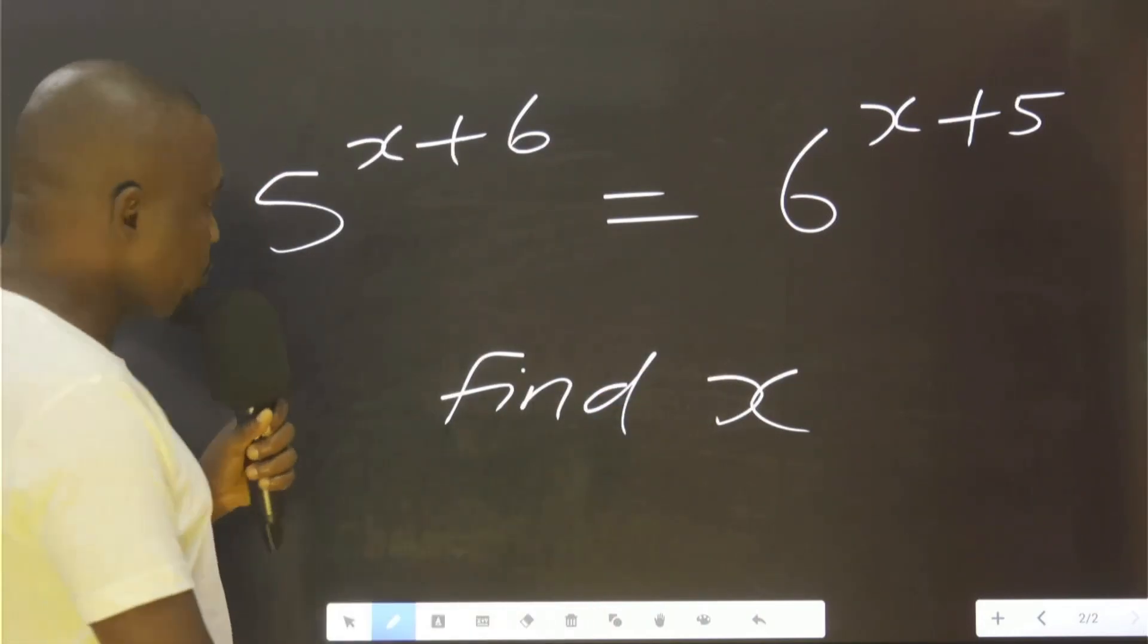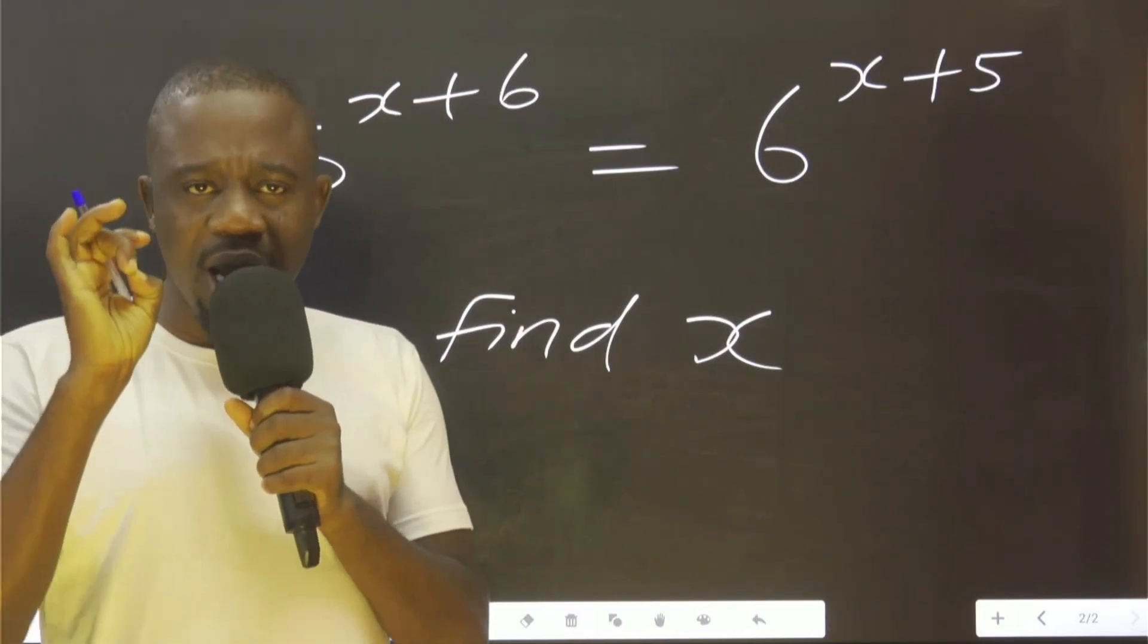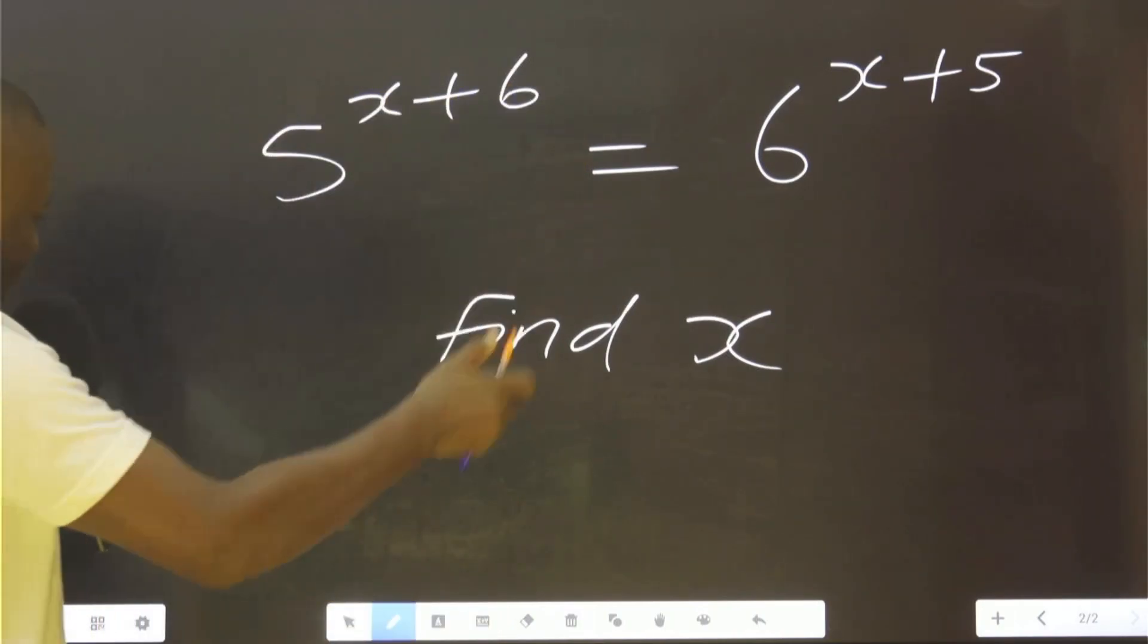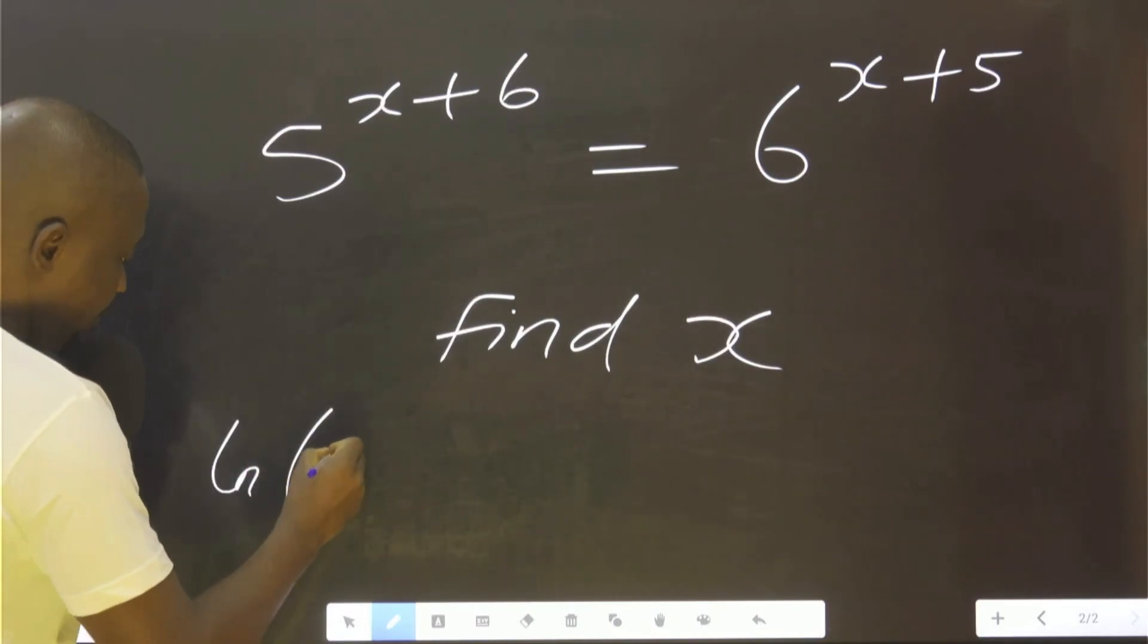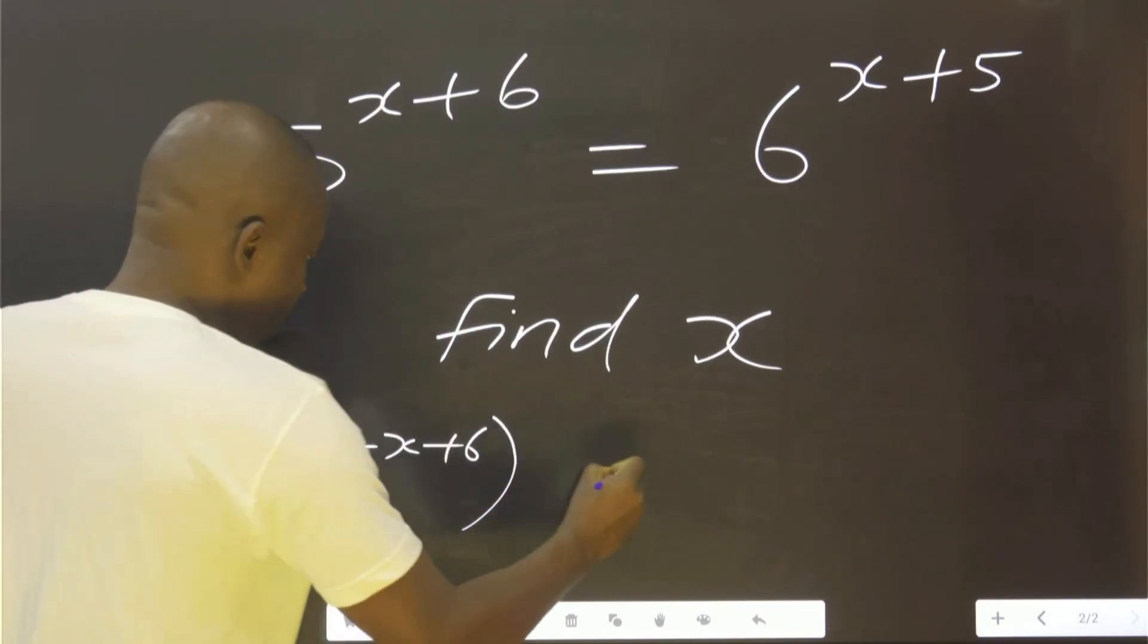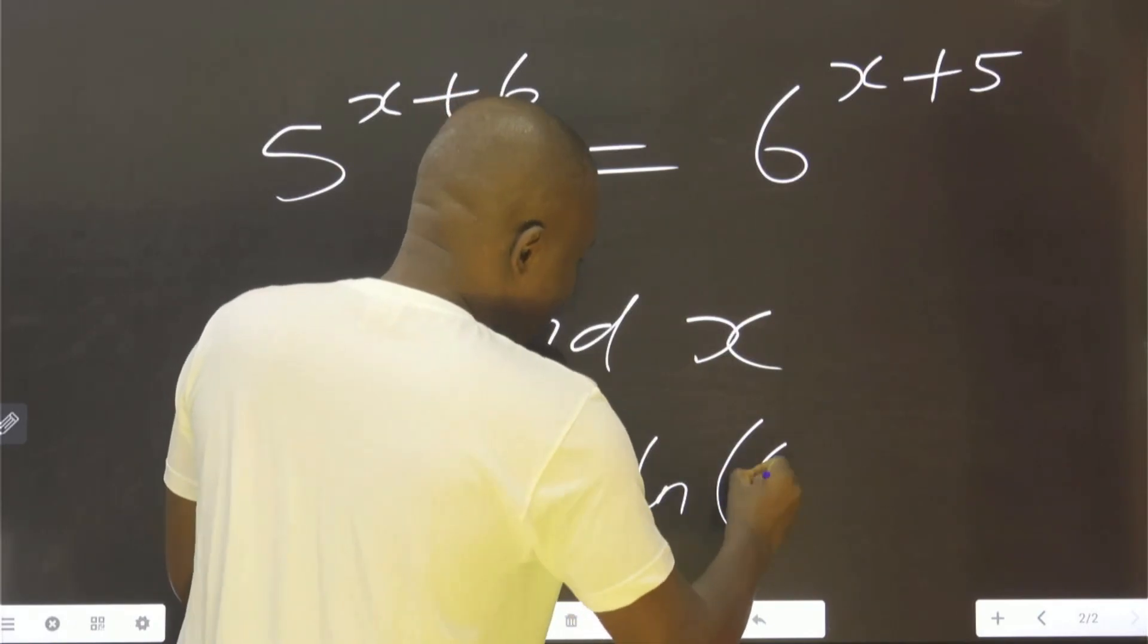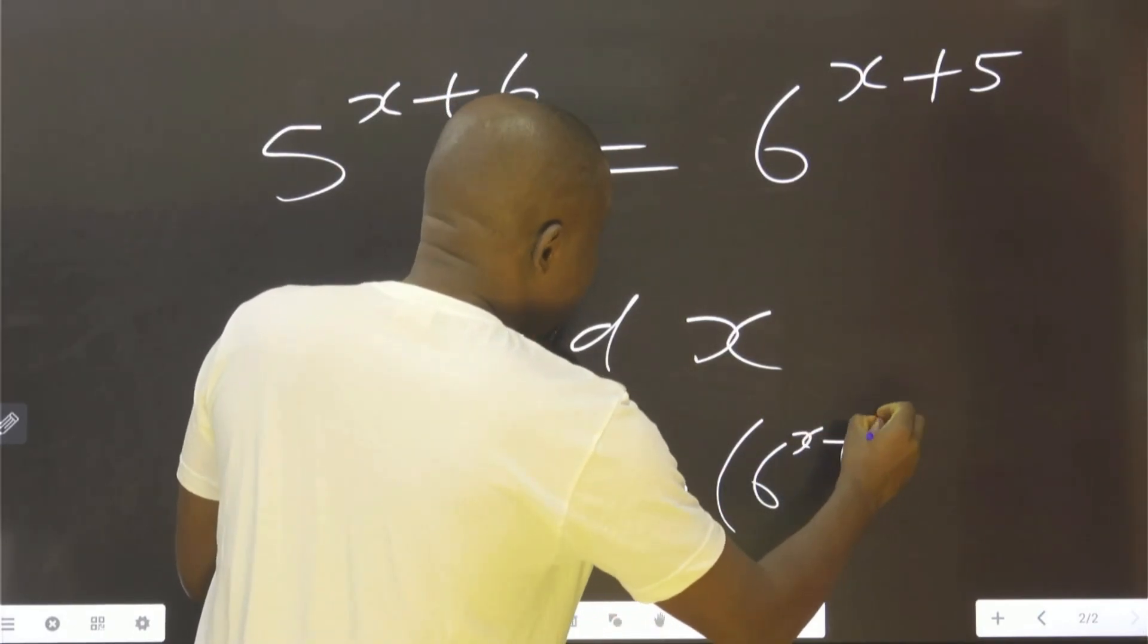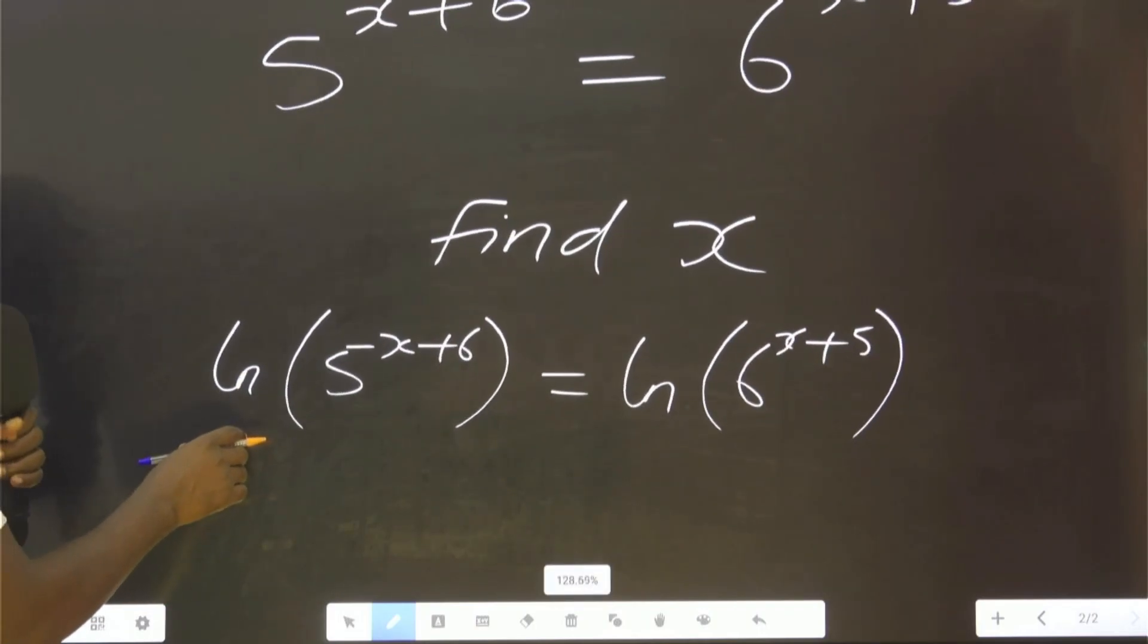Okay? What do we do? Let's first of all find the natural logarithm of both sides. That is 5 raised to the power x plus 6 is equals to 6 raised to the power x plus 5.